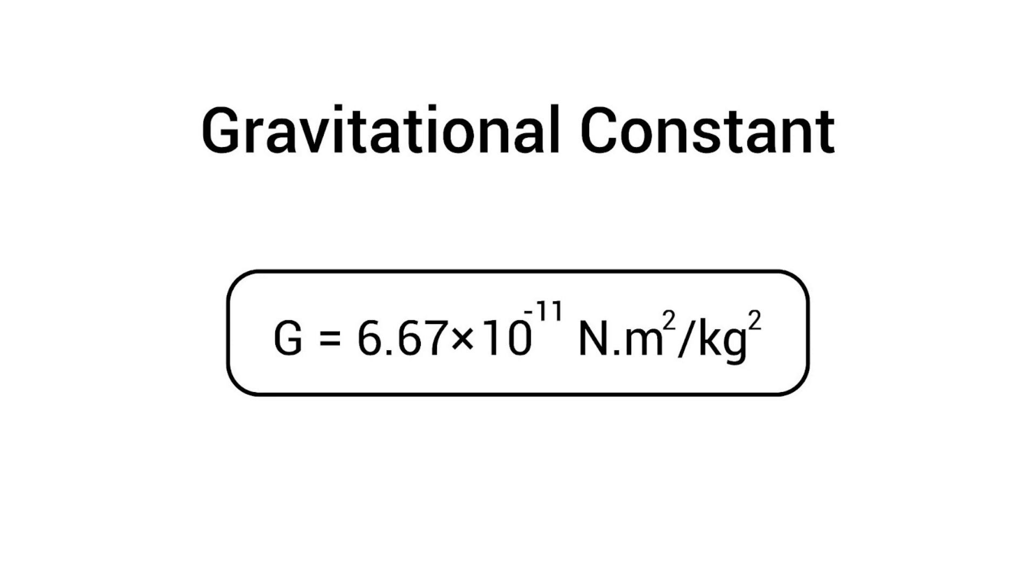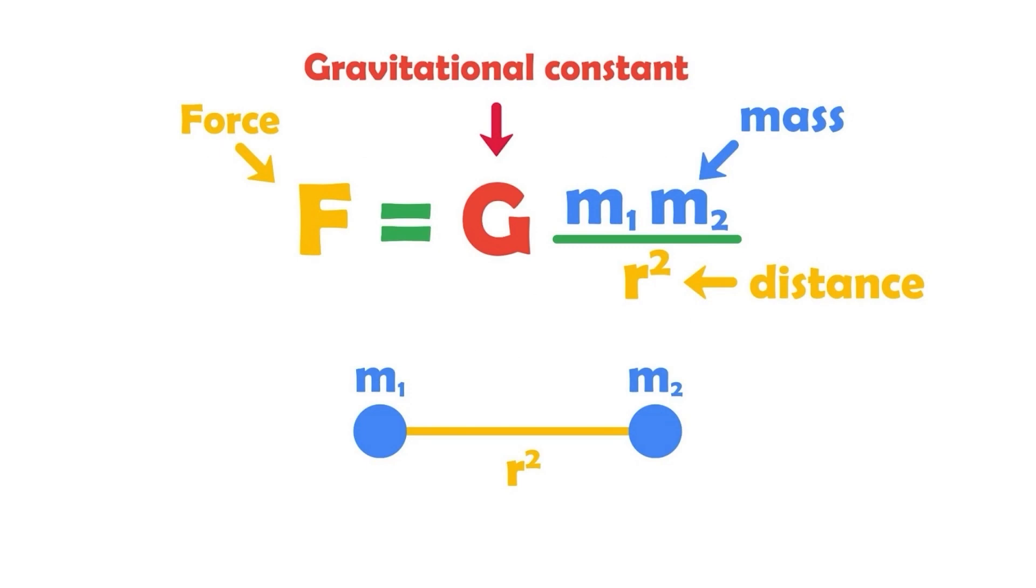Importantly, the units here for our gravitational constant tell us the units we must use in our equation. Our force will come out in newtons, our distance must be in meters, and our masses must be in kilograms. So now we know the gravitational constant, and that allows us to calculate the strength of the gravitational force.